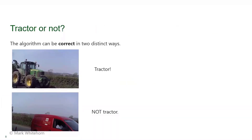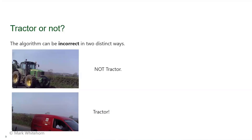The algorithm can be correct in two distinct ways: you show it a tractor and it says 'tractor' - correct; or you show it a Royal Mail van and it says 'not a tractor' - also correct. But those two correct cases are distinguishable. It can also be wrong in two ways: it can look at a big green thing with yellow wheels and say 'not a tractor,' or look at a Royal Mail van and say 'yes, that's a tractor.' Two ways of being right, two ways of being wrong.